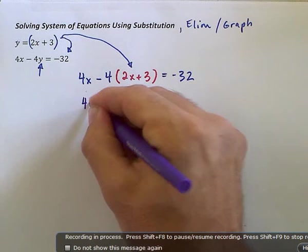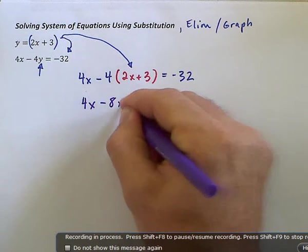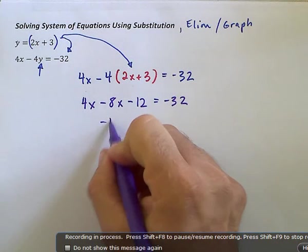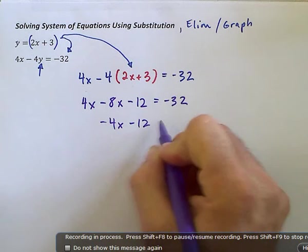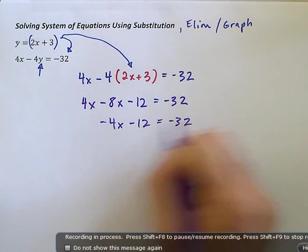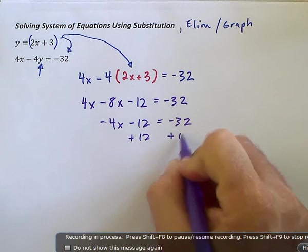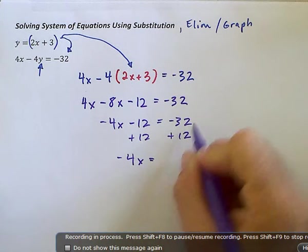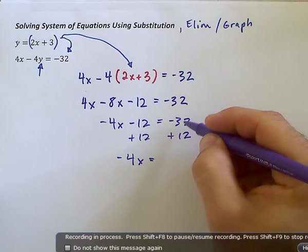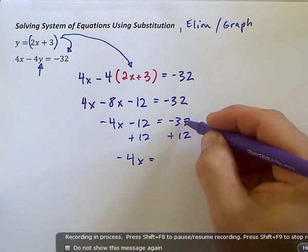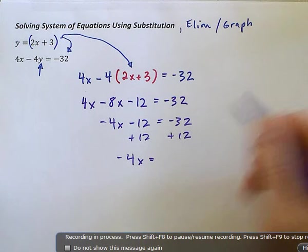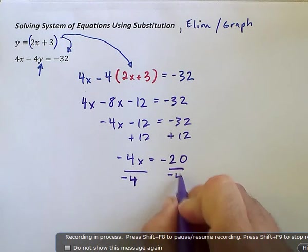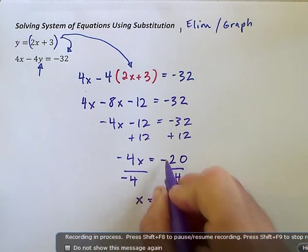4x minus 8x minus 12 is equal to negative 32. Negative 4x minus 12 is equal to negative 32. I'm just solving for x here. Negative 4x is equal to, now I have different signs. I find the difference. The difference between 32 and 12 is 20. Take the sign of the bigger number, negative 20 divided by negative 4. My x is 5, positive 5.